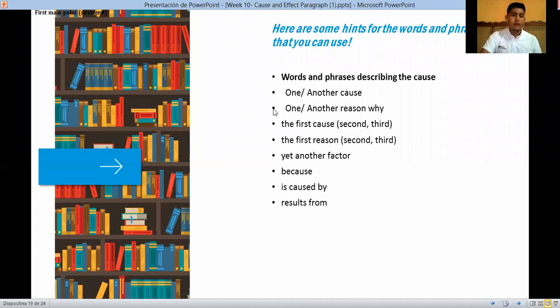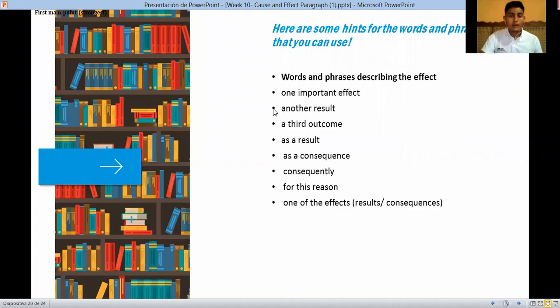And then we have words and phrases describing the effects. One important effect, another result, a third outcome, as a result, as a consequence, consequently, for this reason, one of the effects, result. Those are the words that describe an effect.